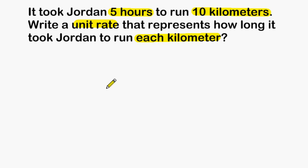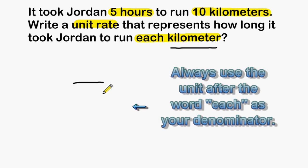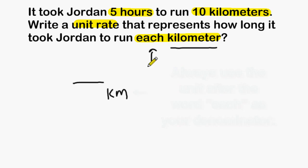When writing a unit rate from given information, write a fraction bar and make sure you write the units used after the word 'each' for your denominator. In this case that would be kilometers, because it is the each unit that you are going to divide by. In the problem they give us the information that he ran 10 kilometers.